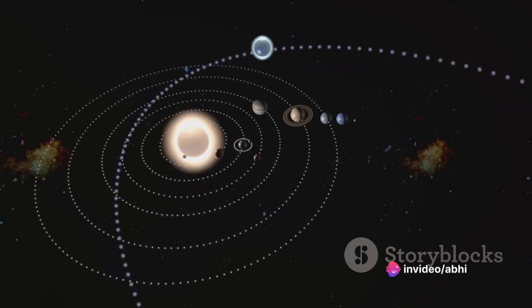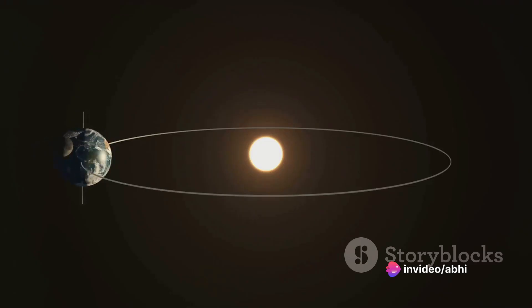Focus now on the intricate dance the planet performs as it orbits the Sun. The orbit is not a perfect circle, but more of a distorted, stretched-out version of one.